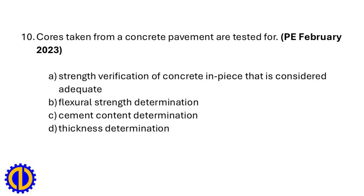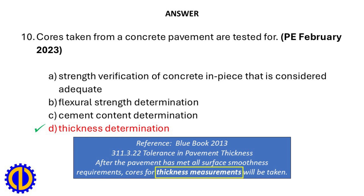Cores taken from a concrete pavement are tested for: a. Strength verification of concrete in place that is considered adequate, b. Flexural strength determination, c. Cement content determination, d. Thickness determination. Answer: d. Thickness determination. Reference: Blue Book 2013, Tolerance in Pavement Thickness — after the pavement has met all surface smoothness requirements, cores for thickness measurements will be taken.